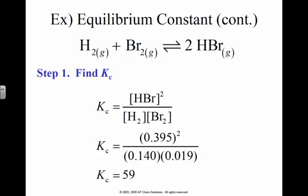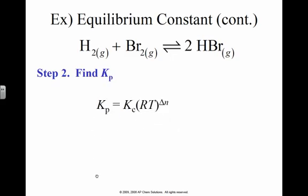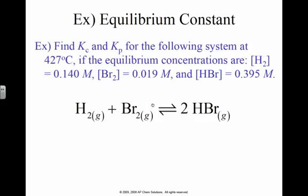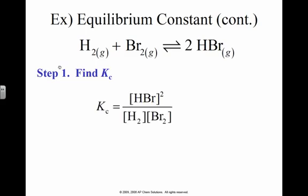Now if I'm solving for Kp, I'm going to take my Kc and plug it in right here. This will be 0.0821, the temperature—I don't remember what our temperature was—427 degrees Celsius, which means I have to add 273 kelvin to that, which is going to be 700.